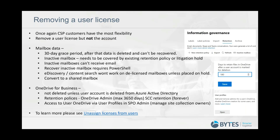Moving to the last scenario: if you decide to completely remove a licence for a user, there's a lot more to think about. CSP customers have the most flexibility for reducing subscription count. Importantly, do not delete the user account — remove the user licence from the admin center but keep the account intact. Block access and remove the licence. However, after 30 days that mailbox will be deleted. Within the 30-day period you can still recover it by reattaching the licence, but after 30 days it's gone.